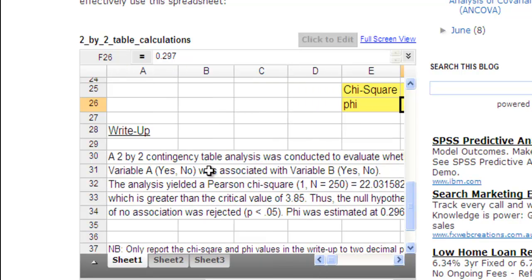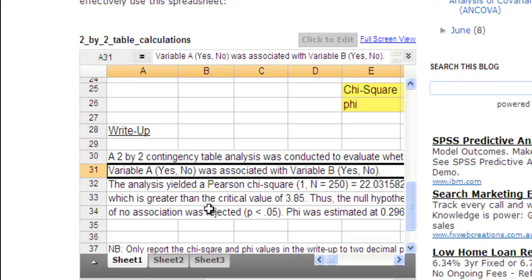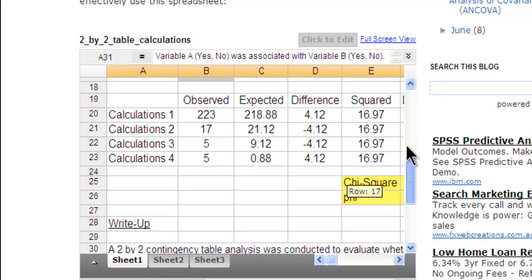So a 2x2 contingency table analysis conducted, and it says the variable A, yes, no, but you can change that by changing the values above. So let me show you an example.